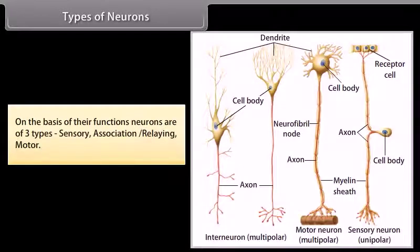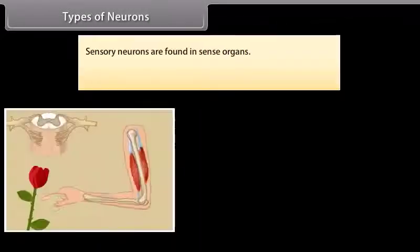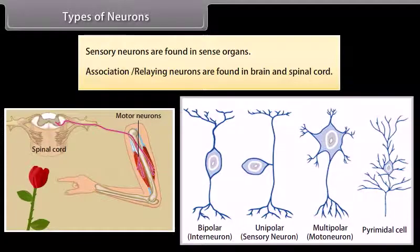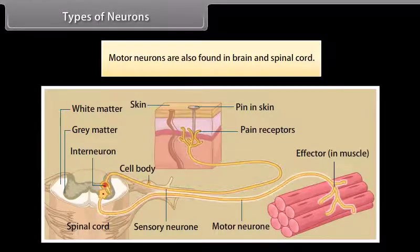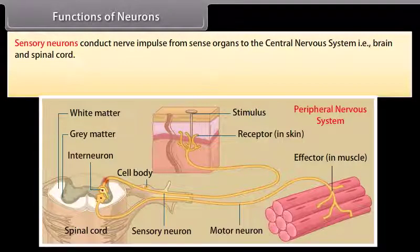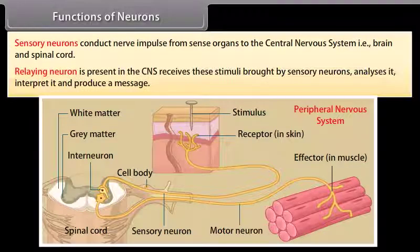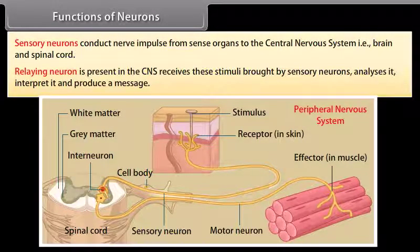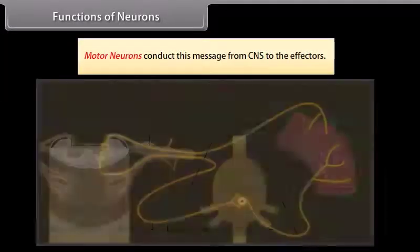Types of neurons. On the basis of their functions, neurons are of three types: sensory, association/relaying, and motor. Sensory neurons are found in sense organs. Association/relaying neurons are found in the brain and spinal cord. Motor neurons are also found in the brain and spinal cord. Sensory neurons conduct nerve impulses from sense organs to the central nervous system. Relaying neurons in the CNS receive stimuli from sensory neurons, analyze and interpret them, and produce a message. Motor neurons conduct this message from the CNS to the effectors.